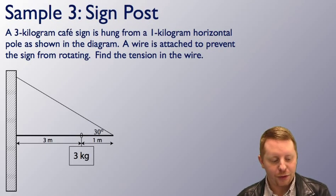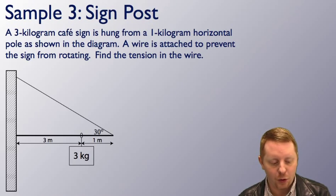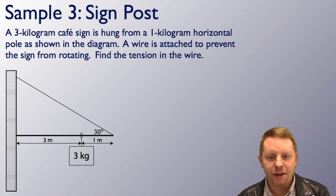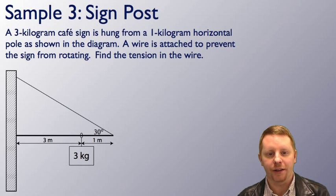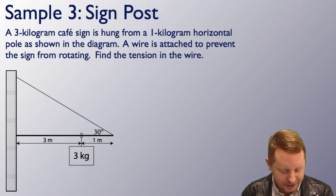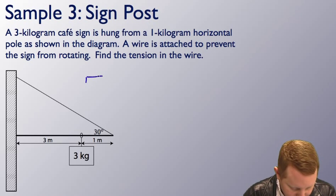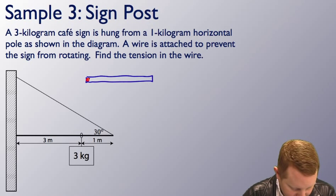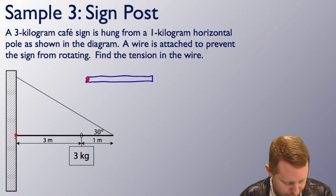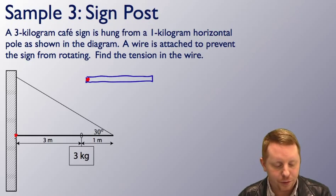Signpost problem. A 3-kilogram CAFE sign is hung from a 1-kilogram horizontal pole as shown in the diagram. A wire is attached to prevent the sign from rotating. Find the tension in the wire. First I'm going to make a diagram of our pole here, realizing that it's going to rotate about that leftmost point. And then take a look at the forces we have on it.